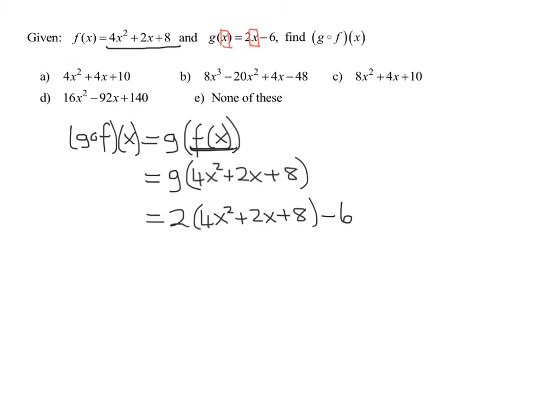So, now all I have to do to simplify is distribute my 2 into the parentheses. So, 2 times 4 is 8x squared. 2 times 2 is 4x. 2 times 8 is 16 minus 6.